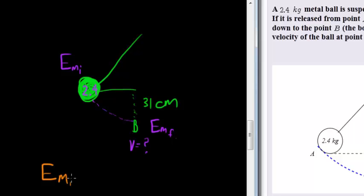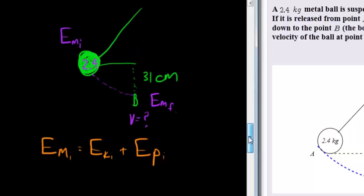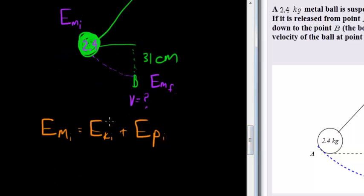Initial mechanical energy is equal to initial kinetic energy plus initial potential energy. Initially, its kinetic energy is zero because it's not moving, it's being dropped, so it's being let go, so initially that's zero because velocity is zero.